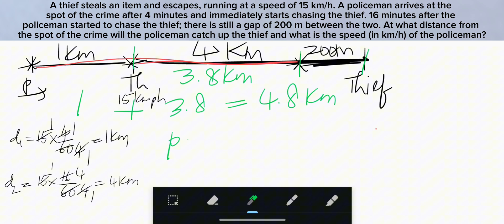So police speed is 4.8 that is 48 by 10 in 16 minutes, 16 by 60. This gives speed of the police. That equals 18 kilometer per hour. Speed of the police is 18 kmph.